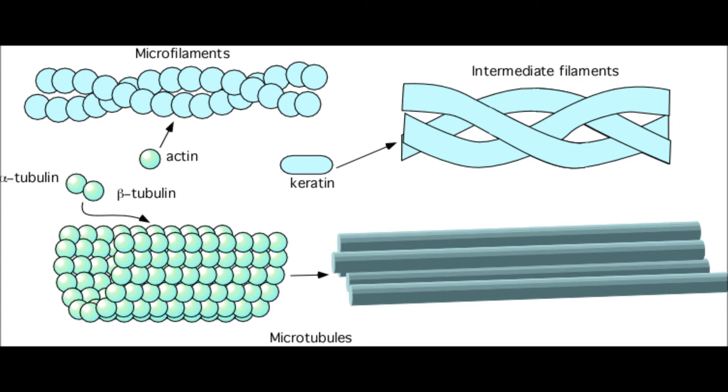Microfilaments so thin and stringy, while microtubules are round. They are located everywhere, been known as the cytoskeleton all along. Holding the shape of the cell, and giving it strength is what they do. Moving other organelles gives a necessary job too.